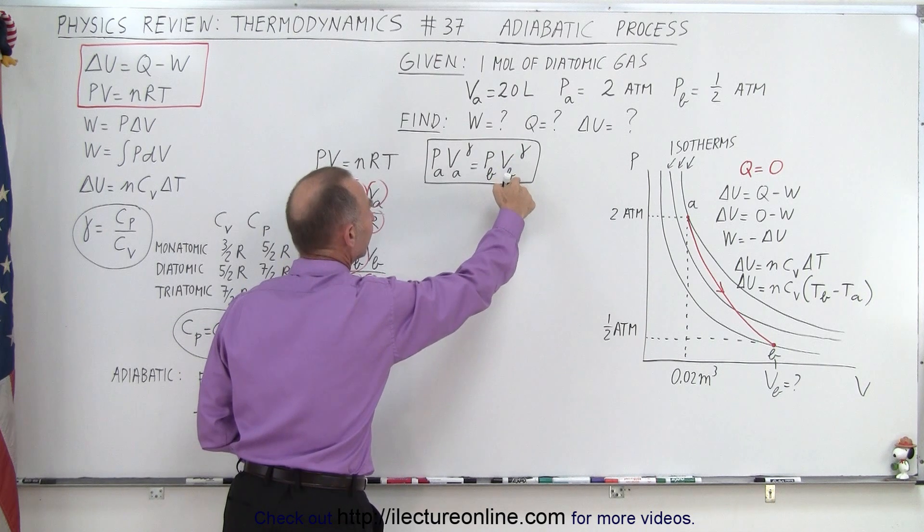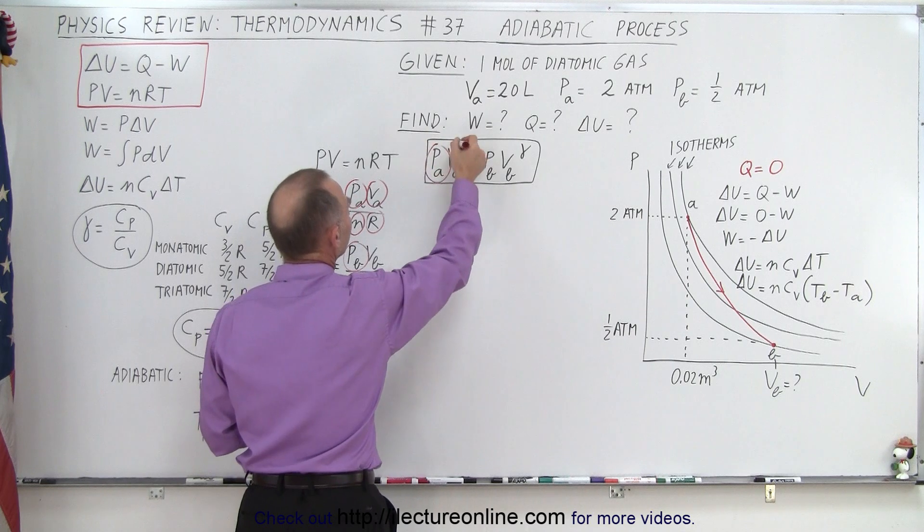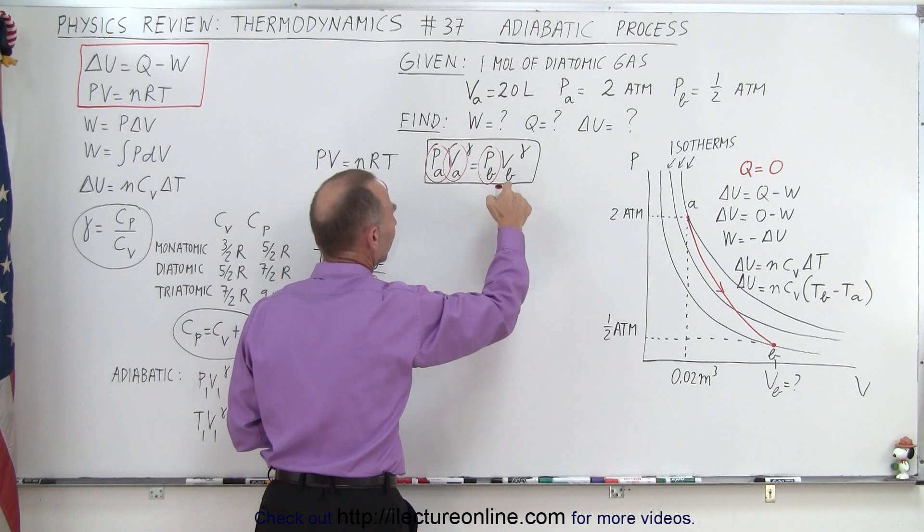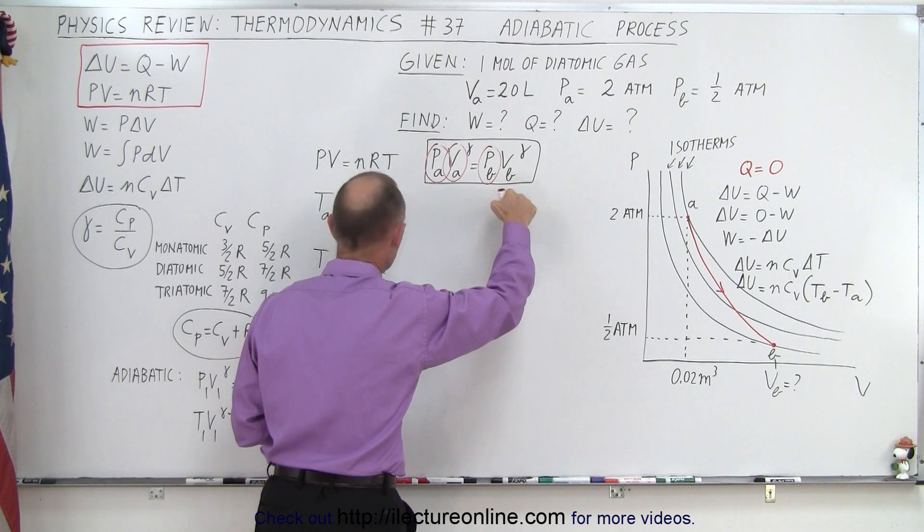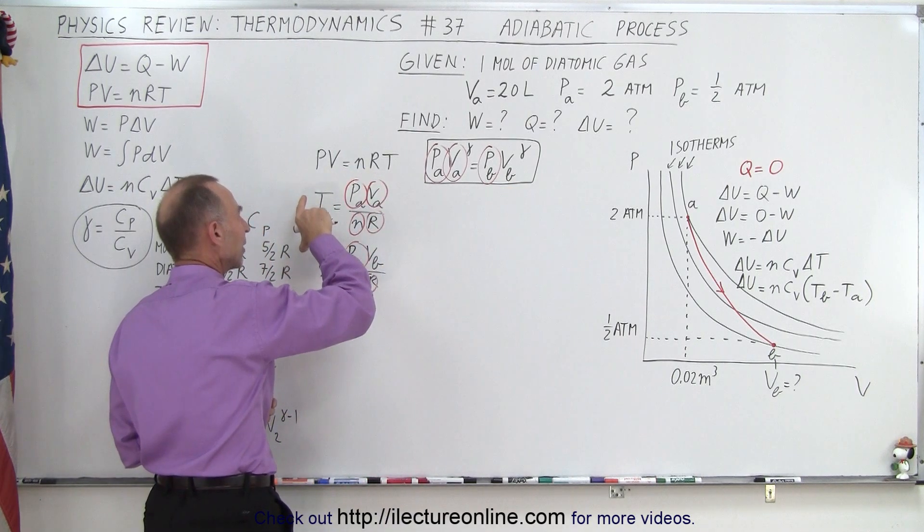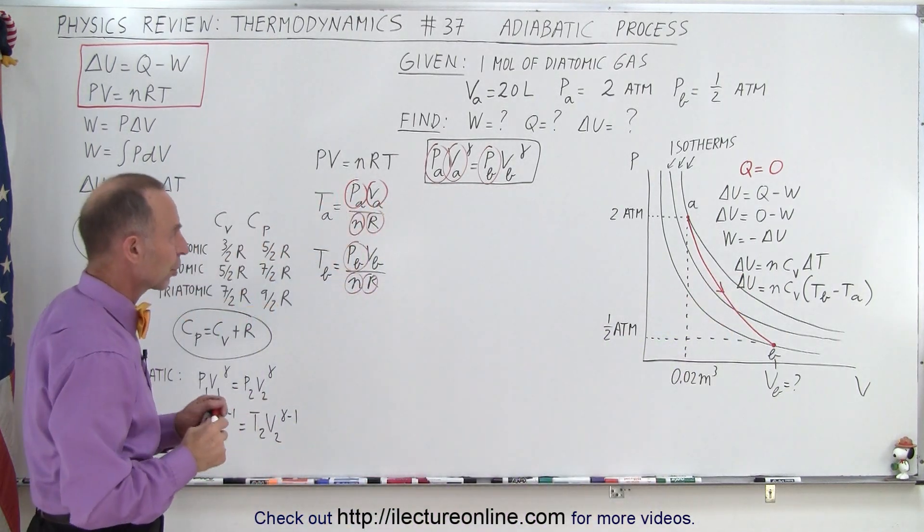We can solve that equation for V at B because we know the other three. We know the pressure at A, we know the volume at A, we know the pressure at B, we just don't know the volume at B. So once we use this equation to find the volume at B, we plug it in here to find the temperature at B. Now that we have both temperatures, we can solve for the change in internal energy, and therefore the work.